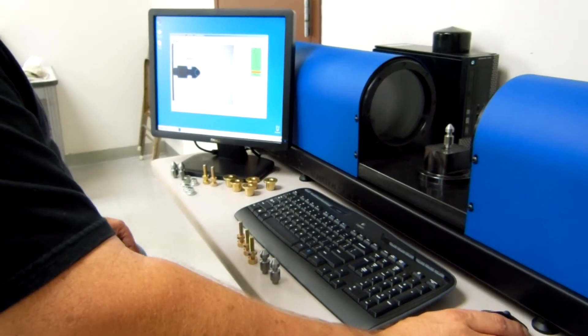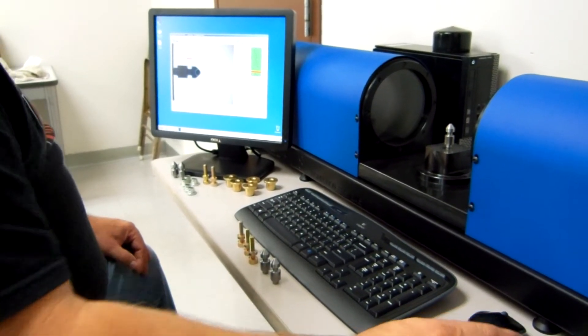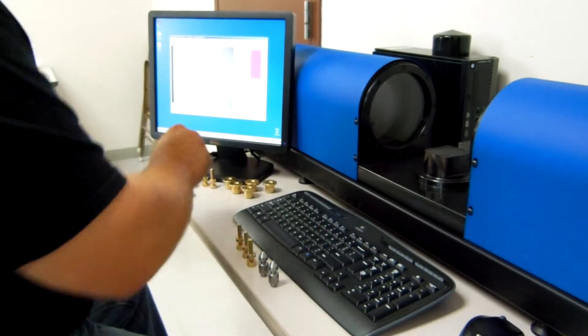You see here, it also defines a dimension that's out of spec, which comes up in red. Parts can very easily be picked out.